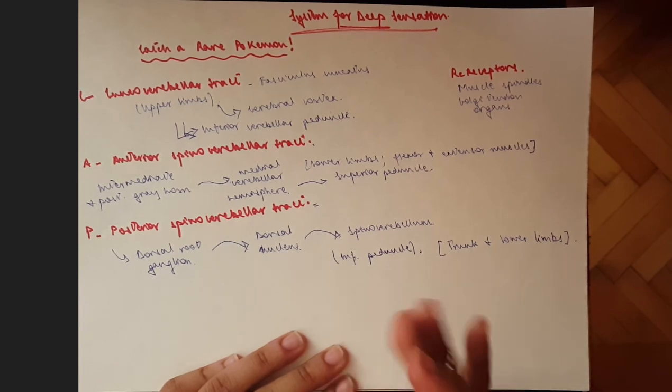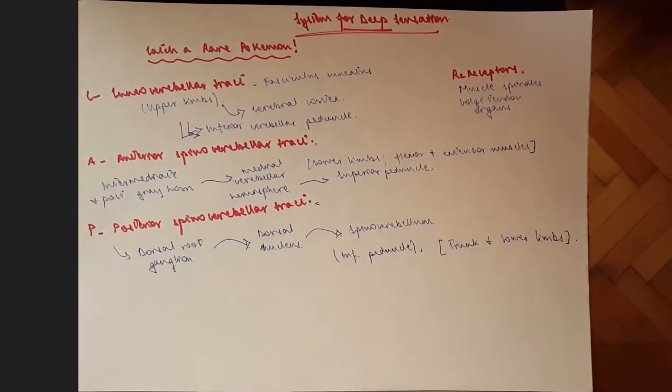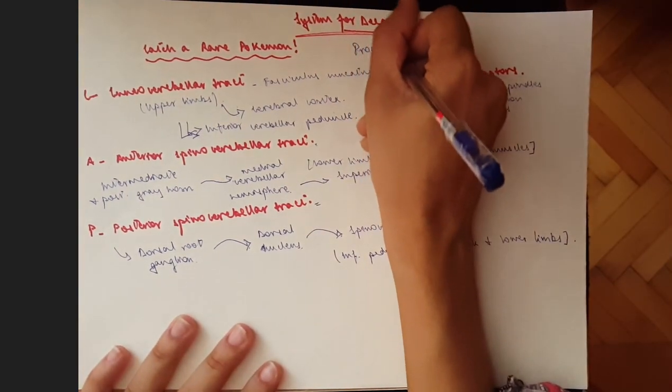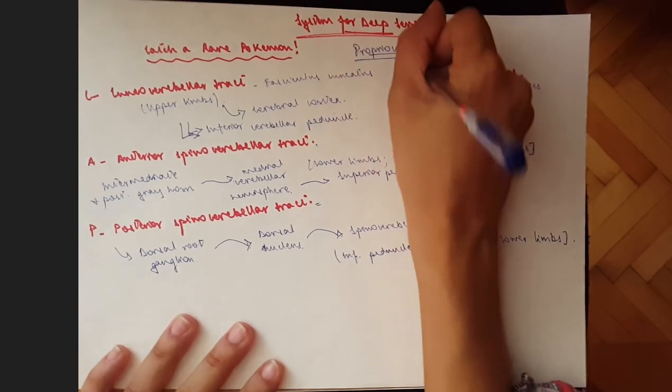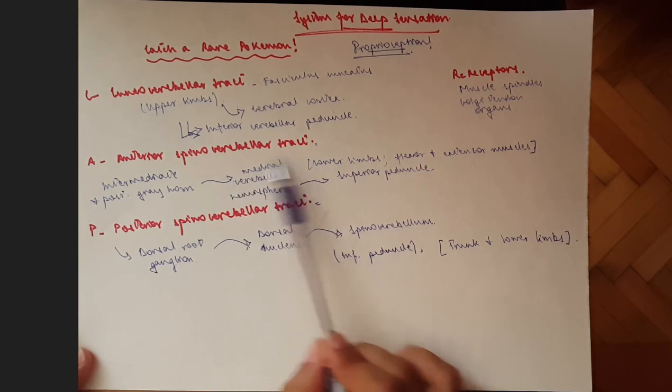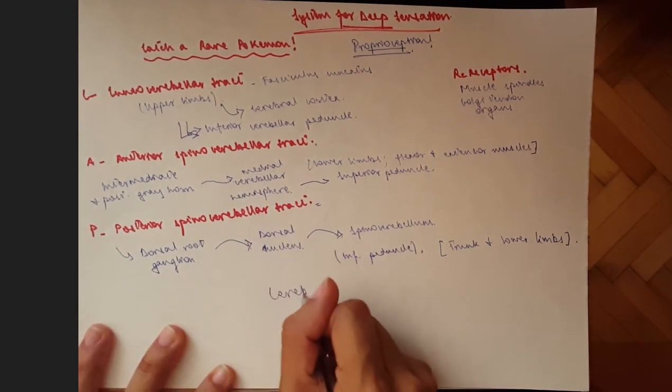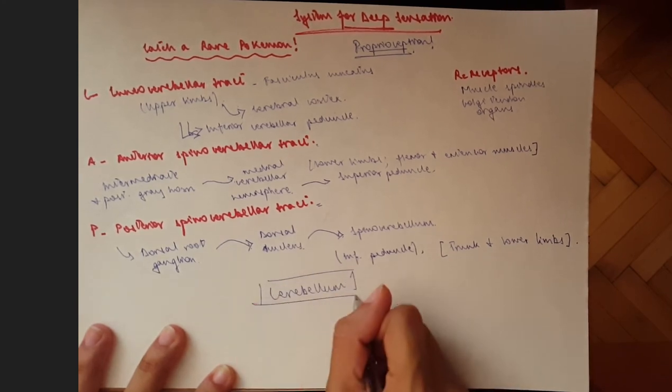Okay, so these are the three tracts. This is what's important, and that would be it. So remember, proprioception, three tracts: cuneocerebellar, anterior and posterior spinocerebellar tracts. Our main destination is the cerebellum because it's for deep sensation. These would be our receptors, and that would be it.